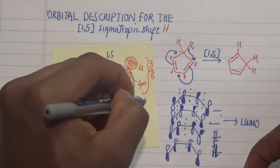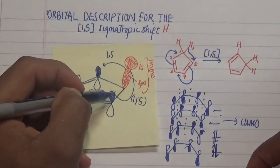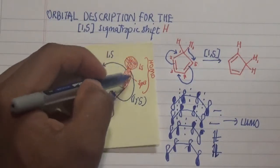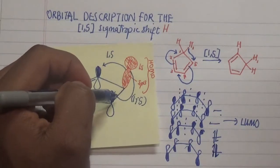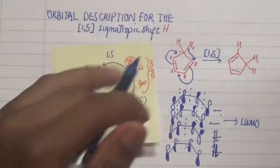The reason is because this has to be done in a suprafacial orbital overlap. In that particular case, the hydrogen atom will slide across the top phase of the planar cyclopentadiene ring in a suprafacial manner.